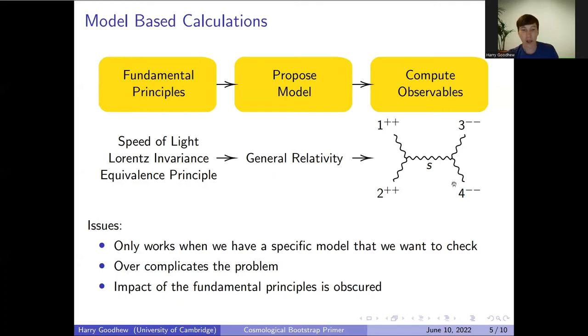However, there are some issues with this procedure. First, if we want to be more speculative with our theories, then we have to calculate this in every single different theory, and that can be a difficult task. Especially because this process of computing the observables through Feynman diagrams is actually very difficult, as there are lots and lots of different diagrams that we can write down and we have to compute all of them and then find their sum. The object that we end up with turns out to be a lot more simple than the individual diagrammatic calculation, so it seems like we're overcomplicating the problem. Finally, doing this calculation method hides the impact that the fundamental principles have on our observables.